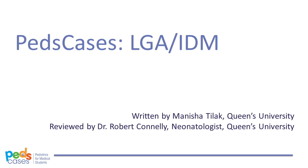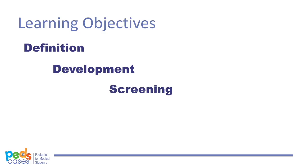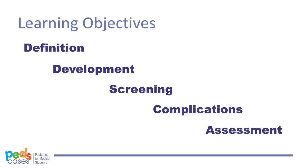Let's start by defining our learning objectives. First, define the term large for gestational age and learn how this relates to infants born to diabetic mothers. Second, describe how maternal diabetes affects the developing fetus before conception and during pregnancy. Third, describe the appropriate screening and treatment of pregnant women with diabetes. Fourth, describe the complications that LGA infants can experience during labor and delivery. Fifth, describe the appropriate postnatal assessment and care of the LGA newborn after birth.